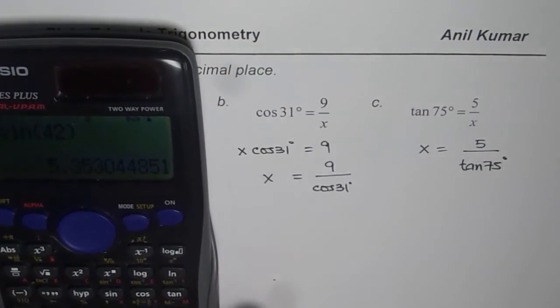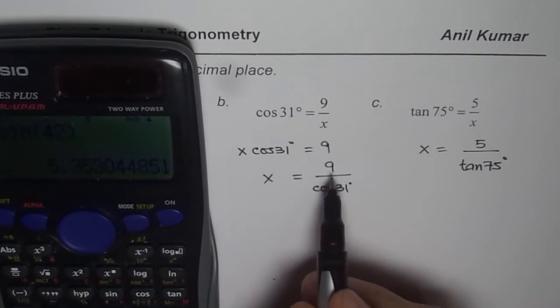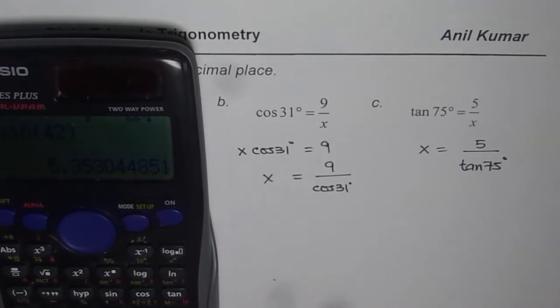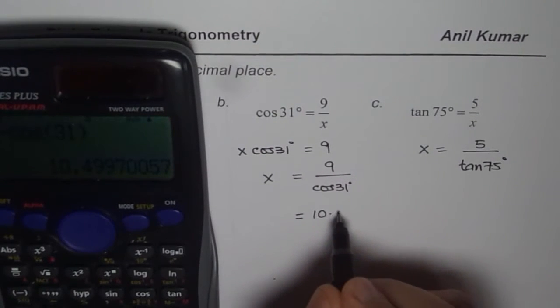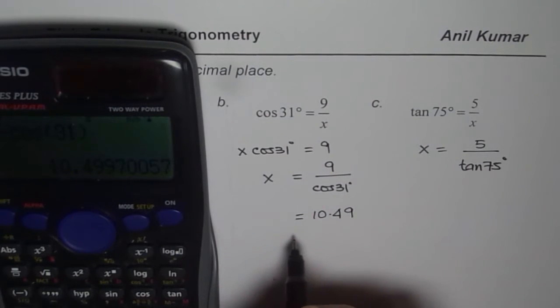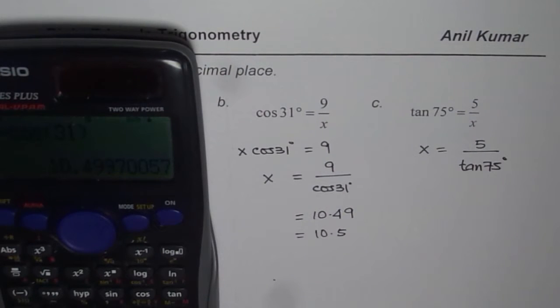Next one. Here, x is 9 divided by cos of 31. So just write 9 divided by cosine 31, bracket close, equals to. That gives you x equals 10.49. Rounding to one decimal place, we get 10.5 as the value of x.